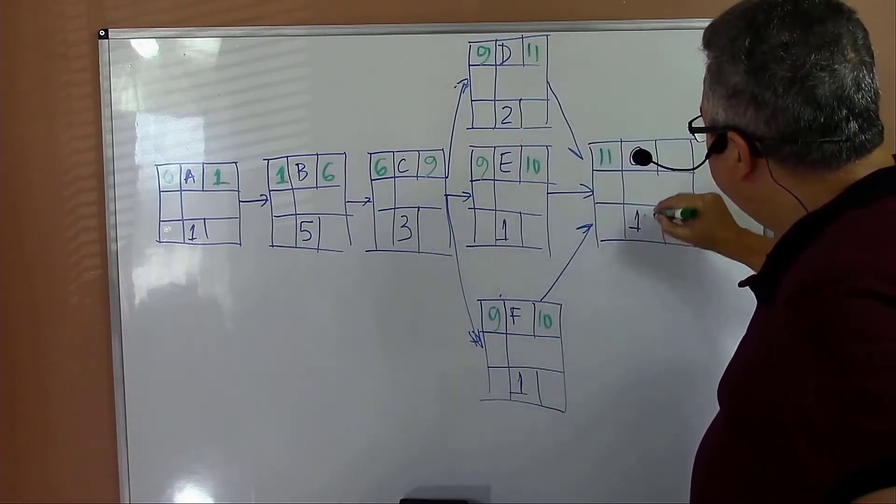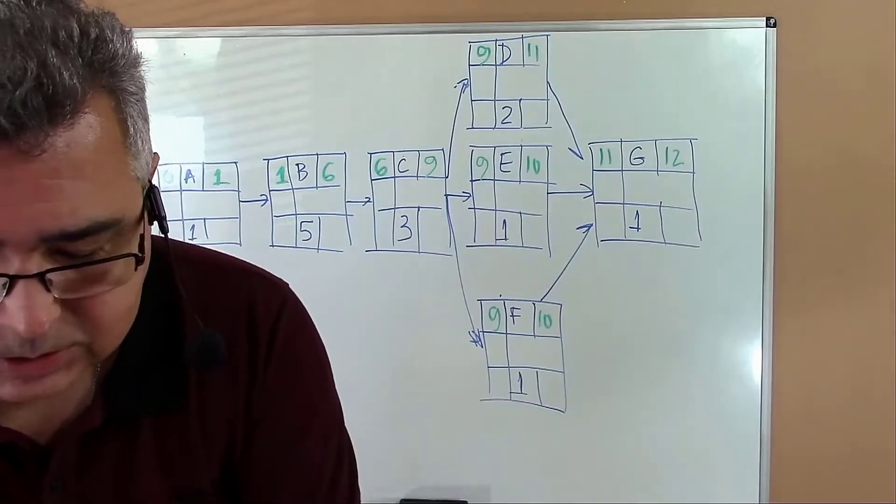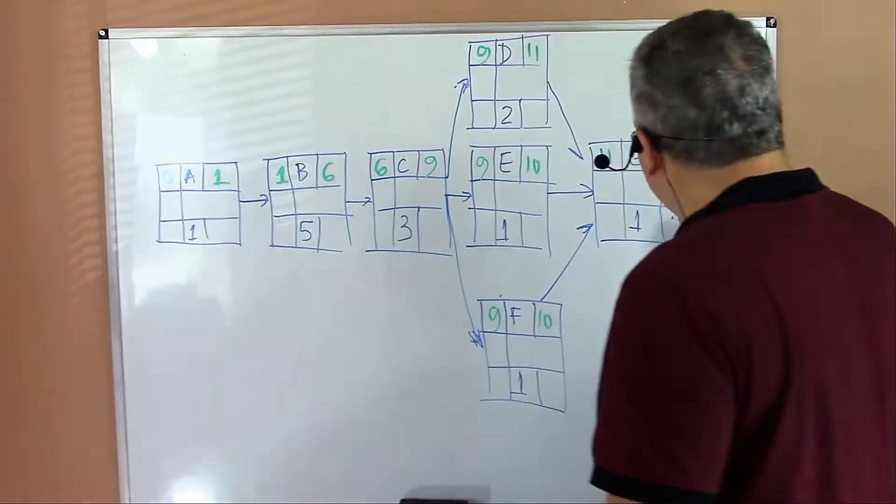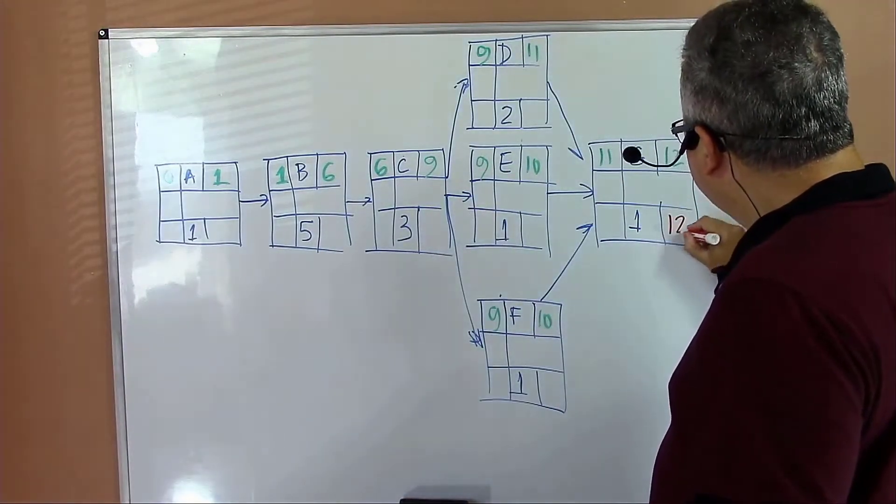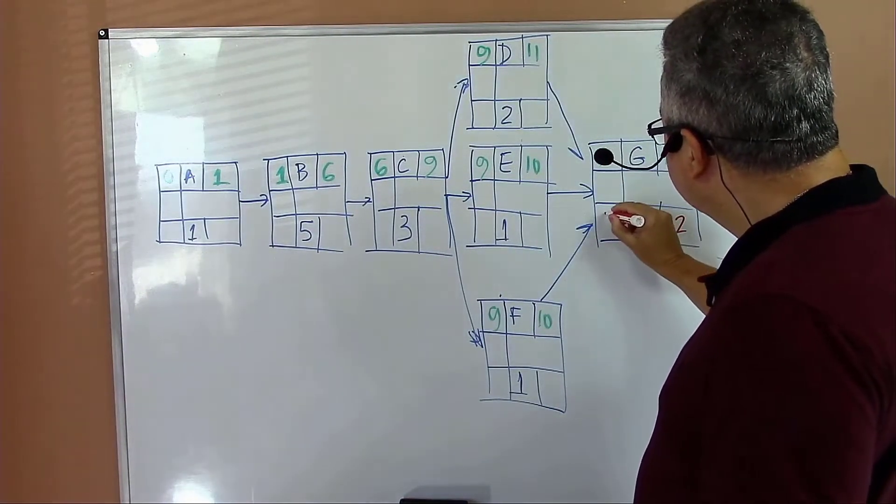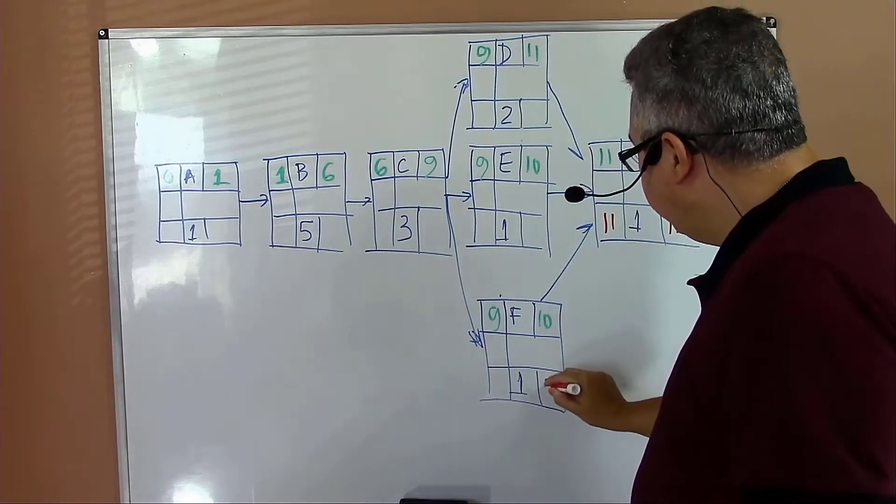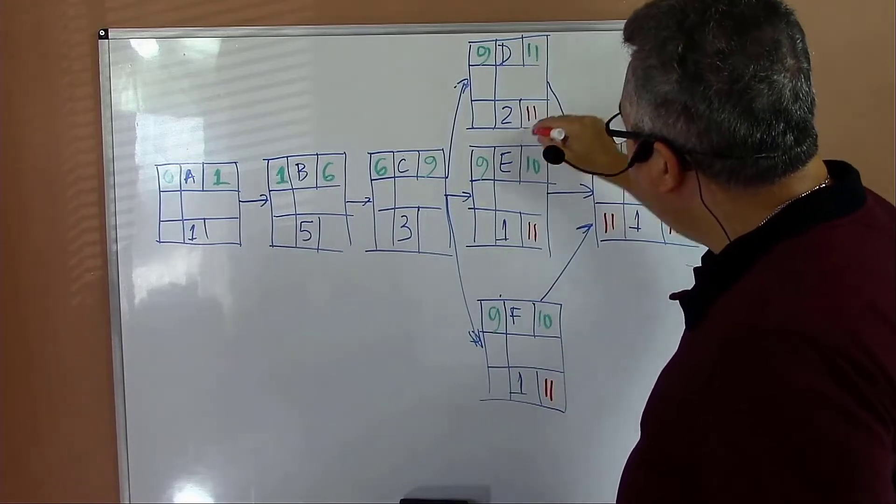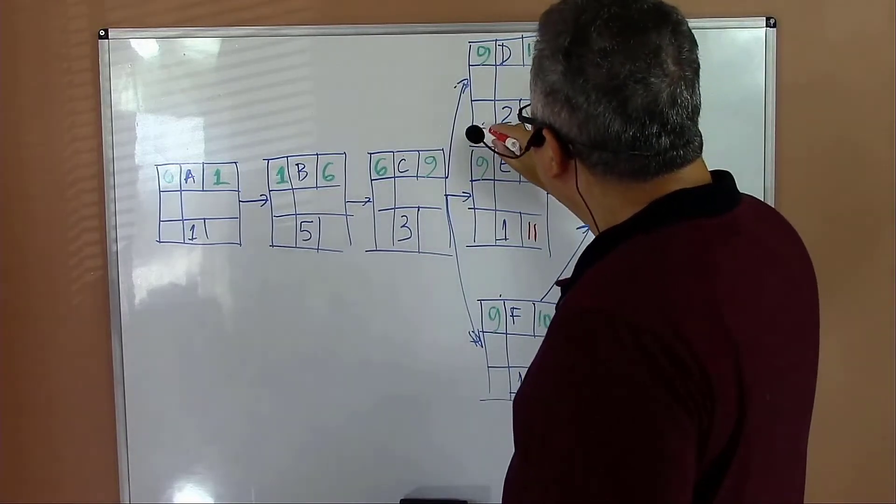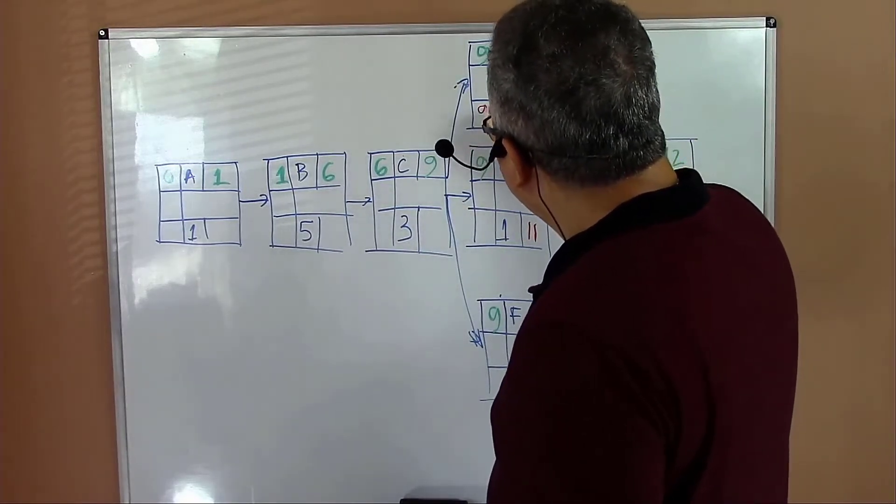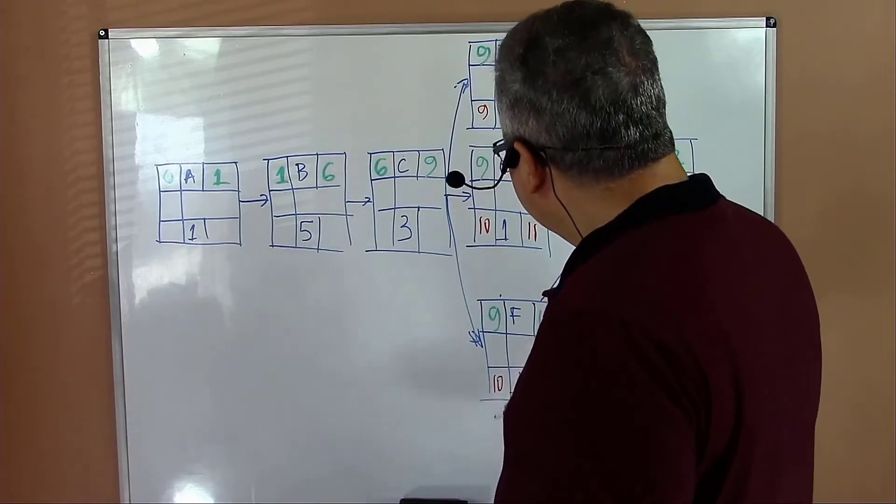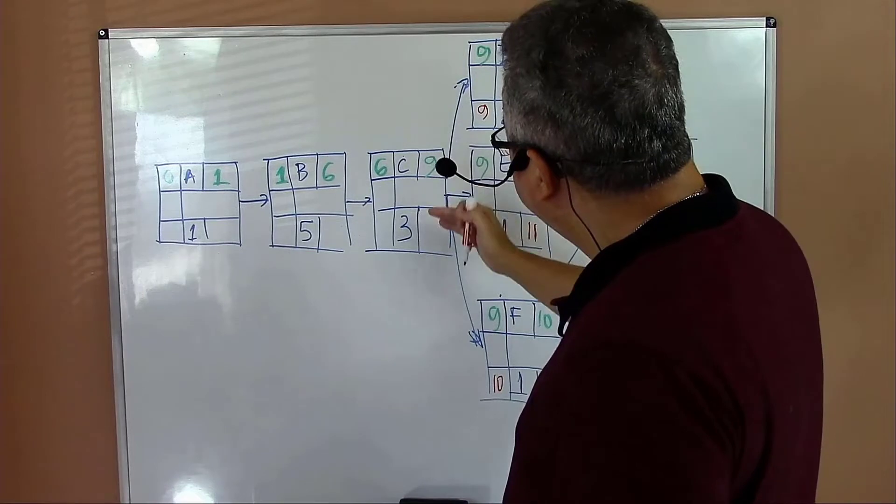On the backward path, we start from the back. Twelve minus one equals eleven. We move eleven for the late finish of all predecessors. Eleven minus two equals nine, eleven minus one equals ten, eleven minus one equals ten. Now we have to move for the predecessor.